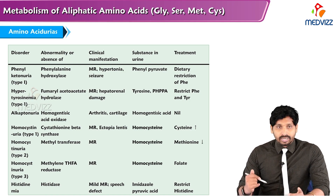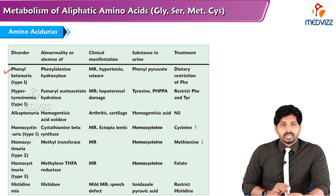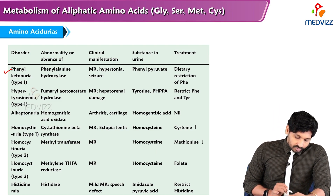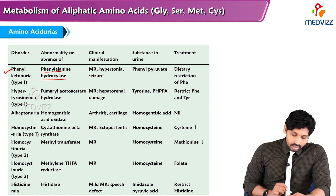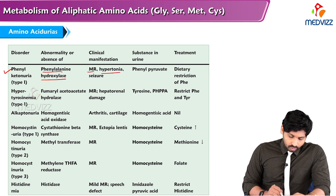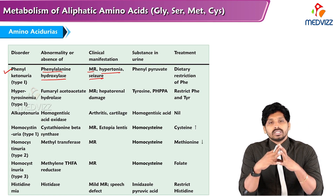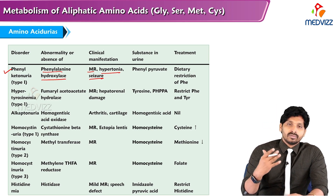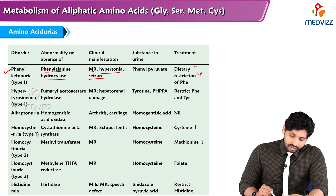To begin with, phenylketonuria. The enzyme deficiency is phenylalanine hydroxylase. Clinical manifestations include mental retardation, hypertonia, and seizures. Due to accumulation of phenylalanine, it takes divert pathways leading to formation of phenylpyruvate, phenylacetate, and phenyllactate, which appear in the urine. The treatment is dietary restriction of phenylalanine.